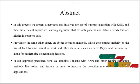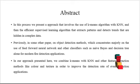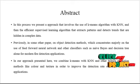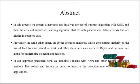Previously, in other papers on object recognition and detection, the focus was majorly on the use of feed-forward neural networks and other classifiers such as Naive Bayes and decision tree alone for modern fire detection applications.